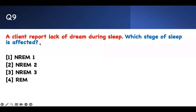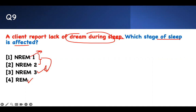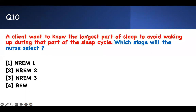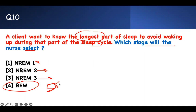Question 9: a client reports lack of dreams during sleep. Which stage is affected? Stage 4 — REM sleep — is where you dream. Stage 3 is where you rest and repair. Stage 2 is the transition stage. Stage 1 is the beginning, light sleep where you don't want to move. REM sleep is where you dream, so that is the stage affected. Question 10: a client wants to know the longest stage of sleep to avoid waking up during it. Stage 1 is shortest. REM sleep takes 50% of your total sleep — that is the longest stage.